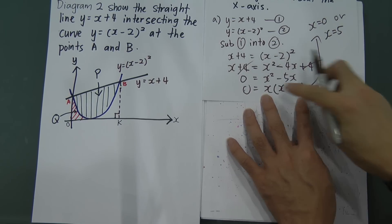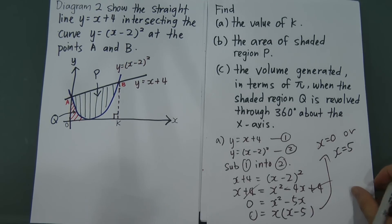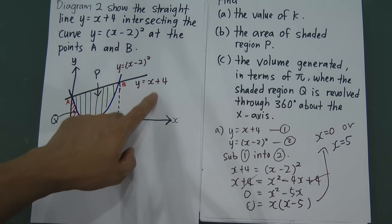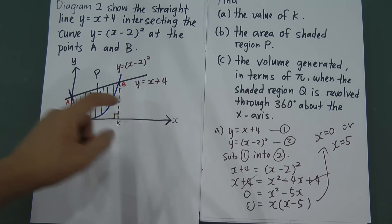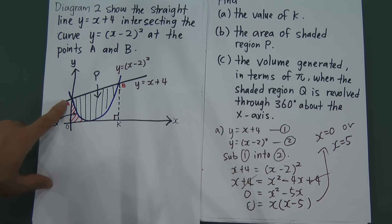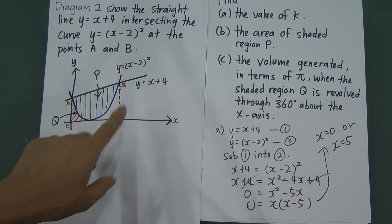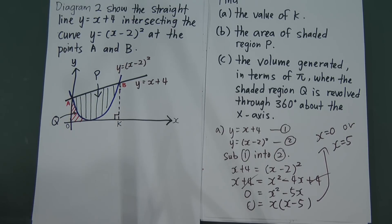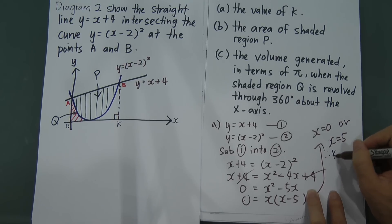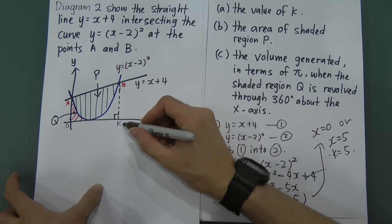Because x minus 5 equal to 0, therefore x will equal to 5. From here, we can know that this curve and this straight line intersect at two x-coordinates. The first is x equal to 0, which is point A. The other one is x equal to 5, which is for k. So from here, I can write: therefore, k is equal to 5.